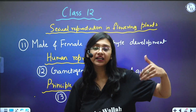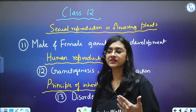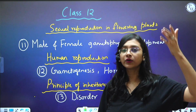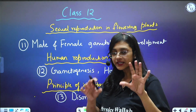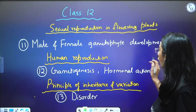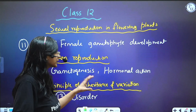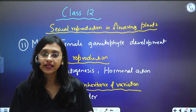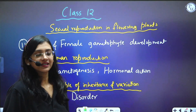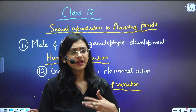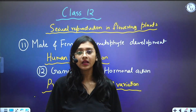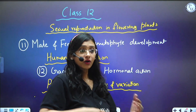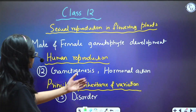From Human Reproduction, gametogenesis — both male and female — is key. That means oogenesis and spermatogenesis from the beginning, from oogonia and spermatogonia all the way to ovum and spermatozoa. You also need to know hormonal action — how FSH, LH, progesterone, estrogen, and testosterone act in both male and female reproductive systems.